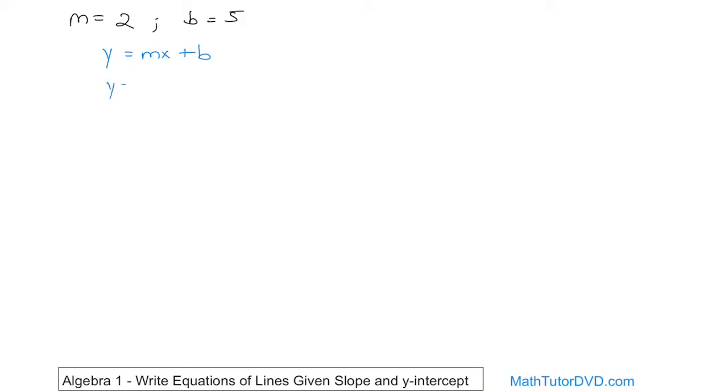So the equation of this line is simply going to be two, put the two where the m is, x plus five. 2x plus 5, and that's the final answer. And that's the equation of the line.